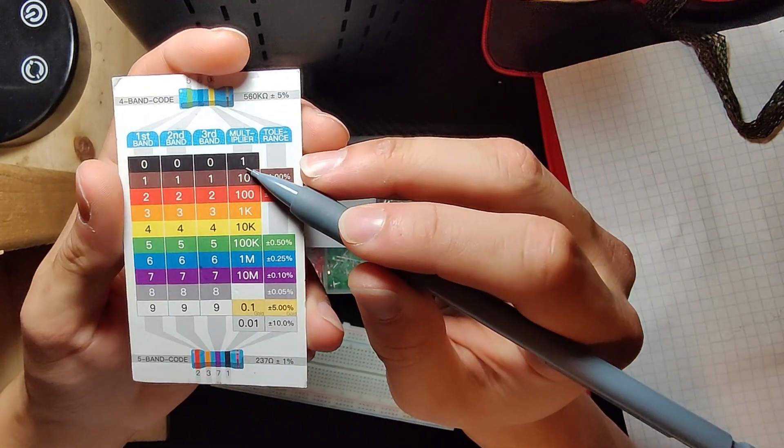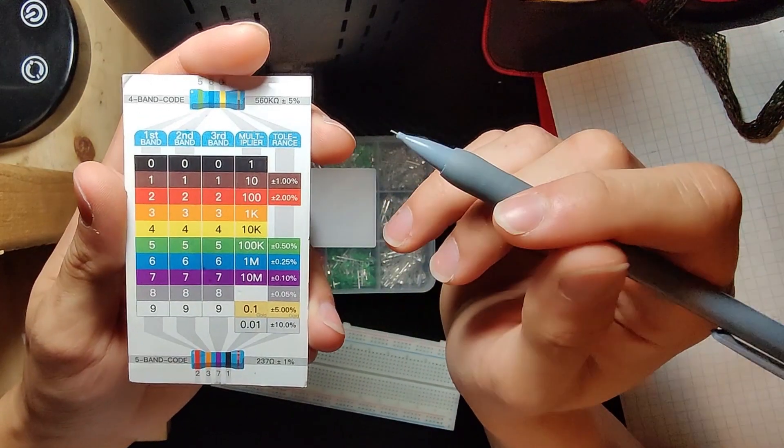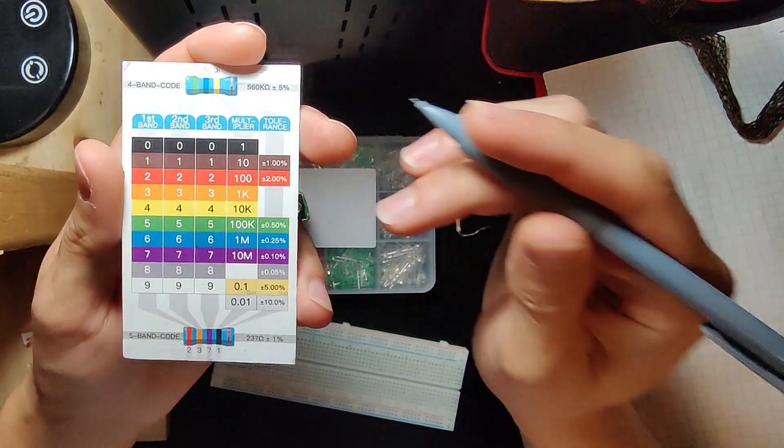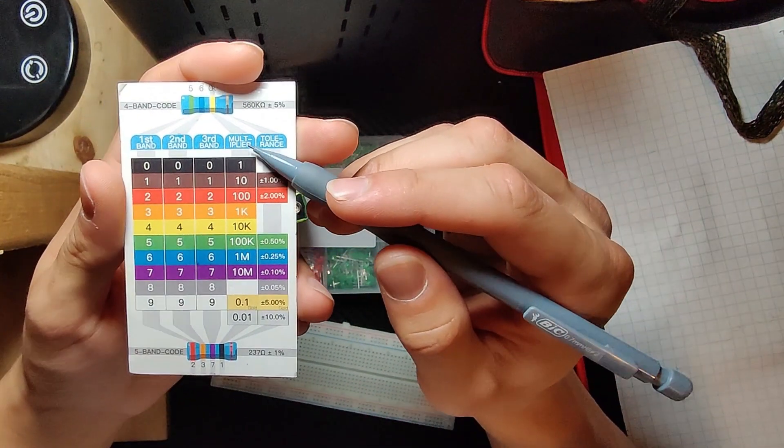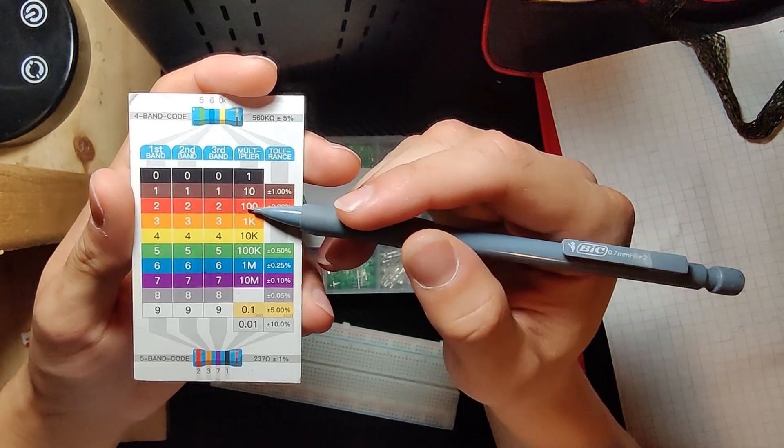If you had 5 band code, it would be 3 digits, 1 multiplier, and 1 tolerance. What you would do with the multiplier is 56 times 10,000 which is 560,000. You could also think of it as just adding as a digit, but you add 4 zeros. Because 10,000 has 4 zeros and 100,000 has 5 zeros. It's better to think of it as a multiplier where you multiply it by 1, multiply it by 10, multiply it by 100.